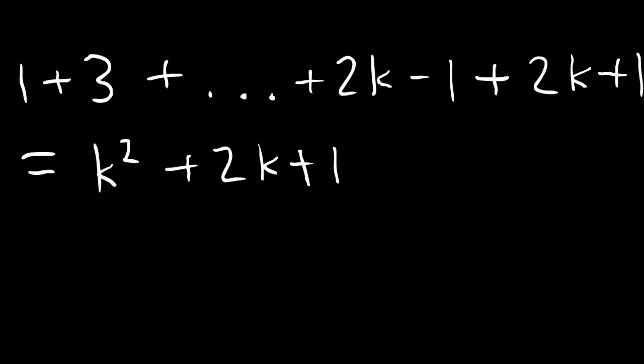To start, add 2k + 1 to both sides, since that's the k plus one term. 1 + 3 + ... + 2k - 1 + 2k + 1 = k² + 2k + 1. You can factor that right side as (k + 1)², which is exactly what we expect and want.